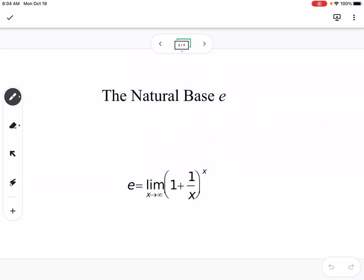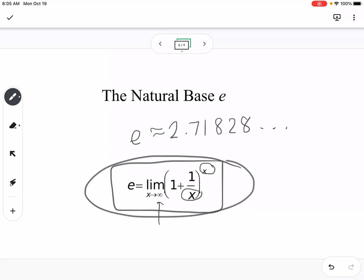Okay, so the natural base e. So this is a fancy way of describing what e is. So this is saying the limit as x approaches infinity of 1 plus 1 over x raised to the x. So one way to kind of figure this out is you could plug in a really big number for x, because this is saying as x goes to infinity. So you could plug in 999, or you could plug in 9,999,000. So plug in a super big number to figure out approximately what e is equal to. So e is 2.718, and it keeps going. So you have an e button on your calculator, and e is used with our exponential functions as well. So it's kind of like a value like pi. You have that button on your calculator. This little limit here explains where e came from.